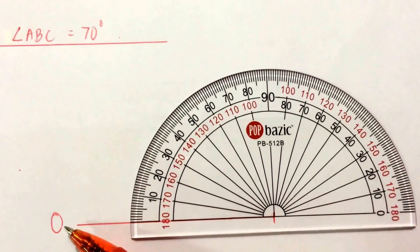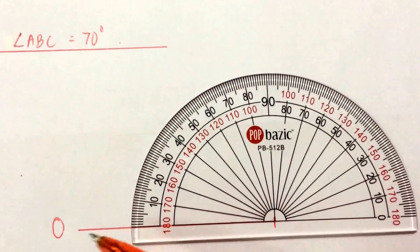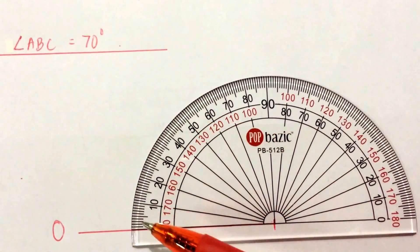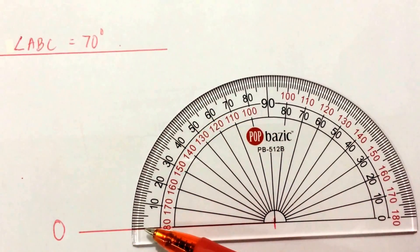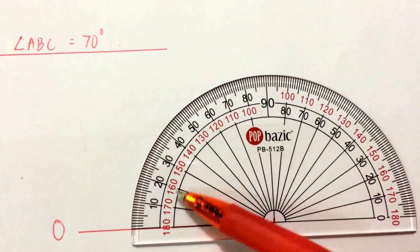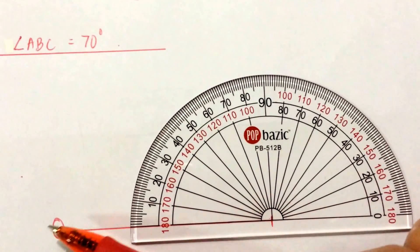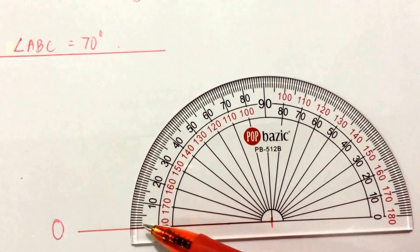This is zero. If this is zero, it means that I will use my outer scale to measure because zero starts from here. I do not use my inner scale because my inner scale starts at 180 here. This is zero, so I use my outer scale.